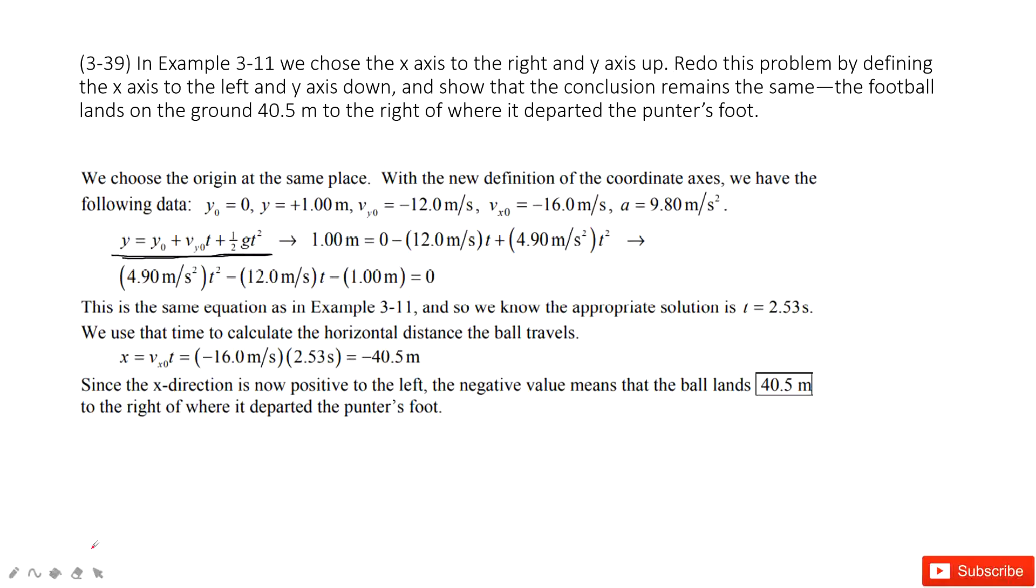For this equation, we can find this one is negative 1, and this one is 0. With y0, we can get it is negative 12. Acceleration is g. So in this one, only unknown is time t. So we can solve this equation and get time t is 2.53 seconds.